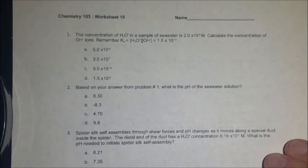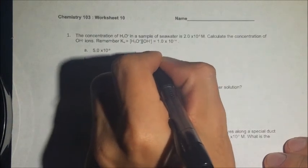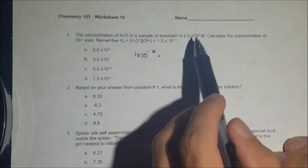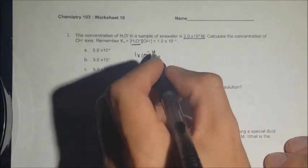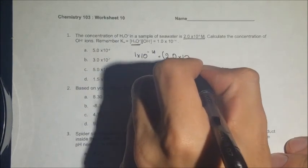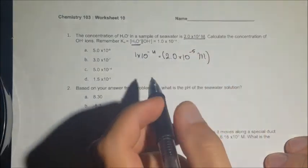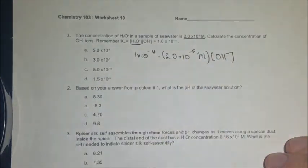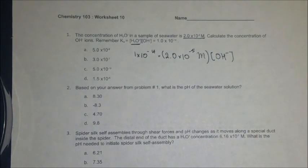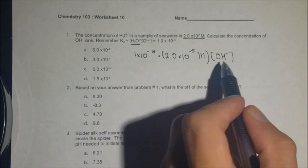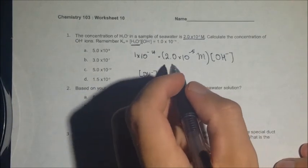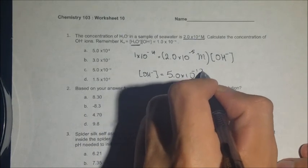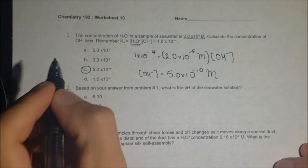Using that equation, 1 times 10 to the negative 14th equals the hydronium concentration times the hydroxide concentration. Our hydronium concentration is 2 times 10 to the negative 5th, so we can solve for the hydroxide concentration by dividing both sides by the hydronium ion concentration. The OH⁻ concentration comes out to 5.0 times 10 to the negative 10th molar, which is answer C for number 1.